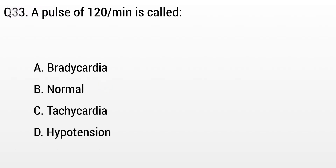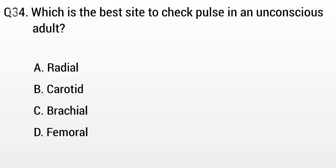Question 33: A pulse of 120 per minute is called? The right answer is option C: Tachycardia. Question 34: Which is the best site to check pulse in an unconscious adult? The right answer is option B: Carotid.